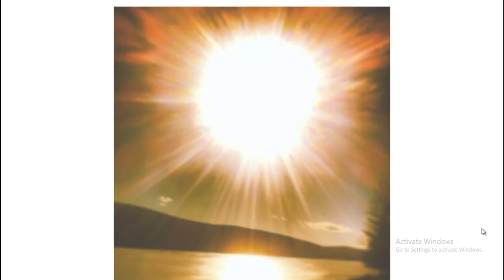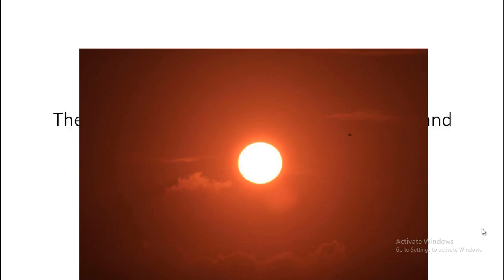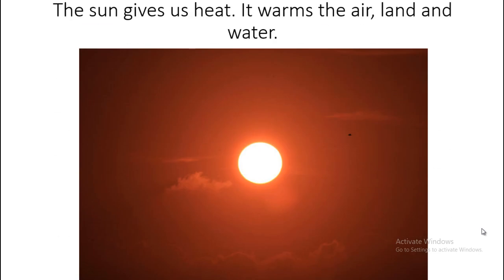Hello again! The title is coming, don't worry. First I wanted to show you a picture. The Sun is the brightest object in the sky and it gives us light and heat. The Sun warms the air, land, and water.